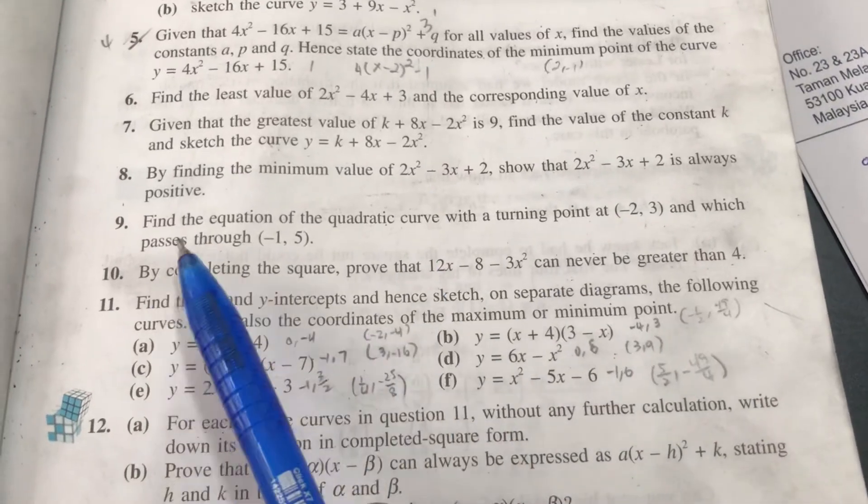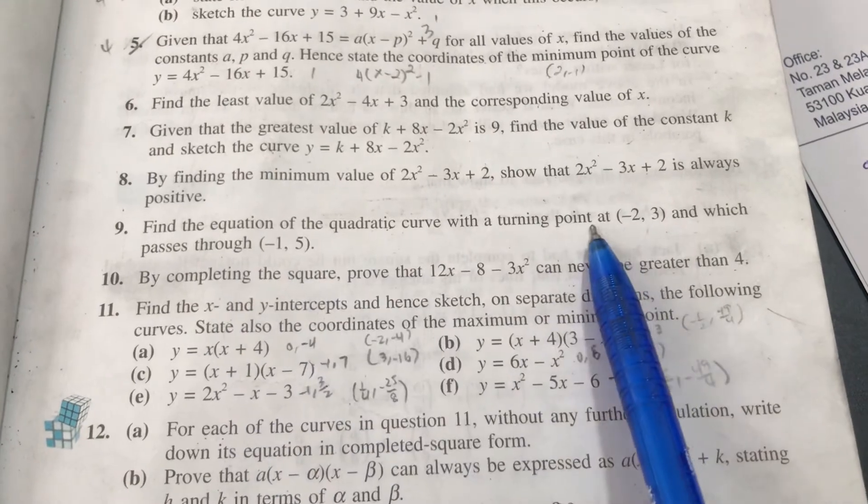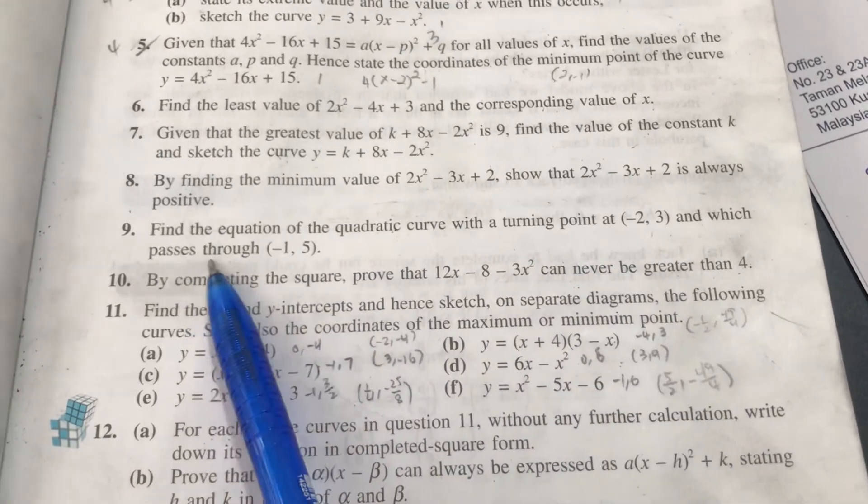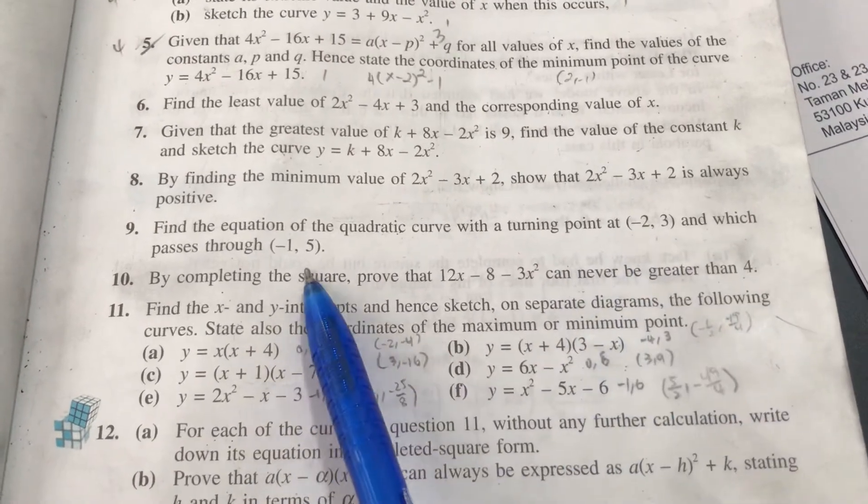Okay, let's look at question number 9. They said I have to find the quadratic equation. They gave me a turning point and said the equation passes through (-1, 5). This is also a point.